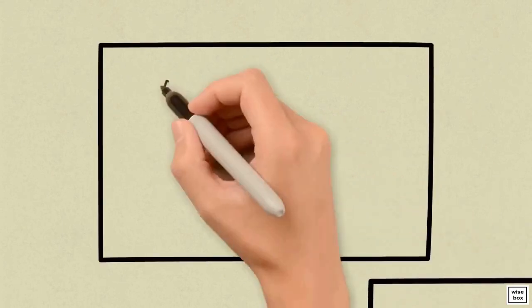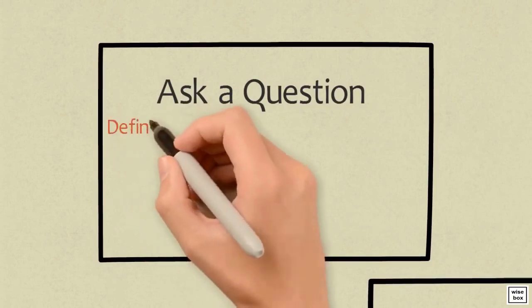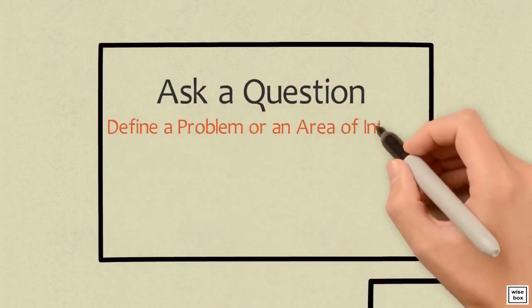The first step in the scientific method is to ask a question. Really, you can either ask a question, define a problem, or define an area of interest.